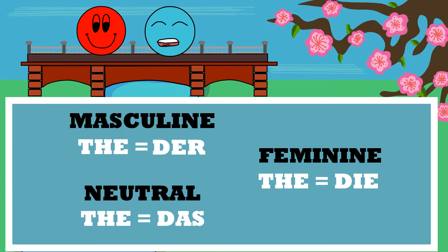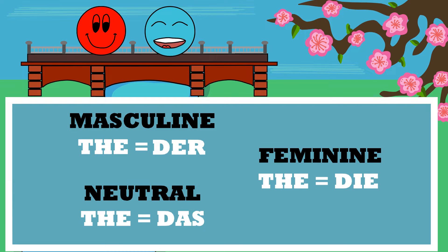As I mentioned before, German nouns have gender: masculine, feminine, and neutral. Now we will discuss that. We will just have to learn it, and sad to say there is no logical way of knowing whether the word is feminine or masculine. It is more that you just have to memorize it together with the German words.